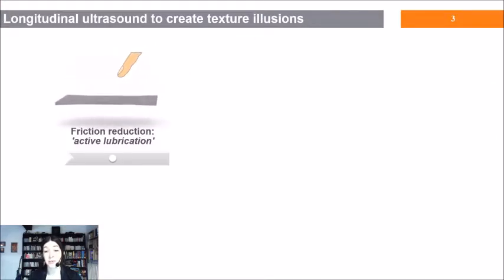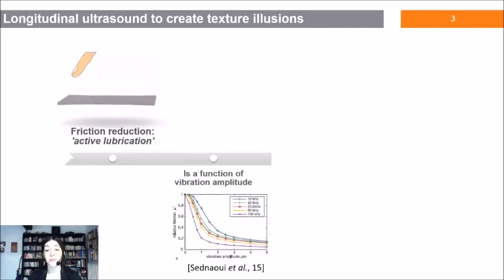The vibration decreases friction. The friction decrease is a function of vibration amplitude which can be modulated to create an illusion.